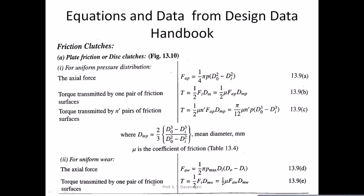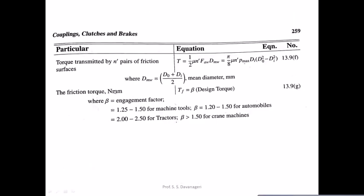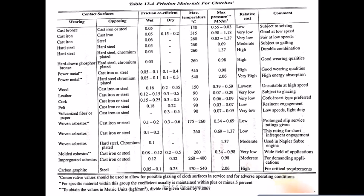Under uniform wear theory, the axial force FAW = (1/2) × π × P_max × D_inner × (D_outer − D_inner). Torque transmitted by one pair of friction surfaces = (1/2) × μ × FAW × DMW. Torque transmitted by n-dash pairs = (1/2) × μ × n-dash × FAW × DMW, where W denotes wear theory and P denotes pressure theory. Friction torque TF = β × design torque, where β is an engagement factor selected based on application.